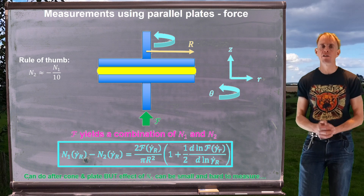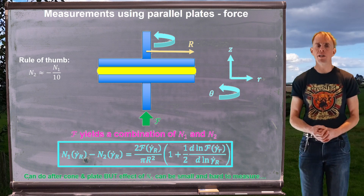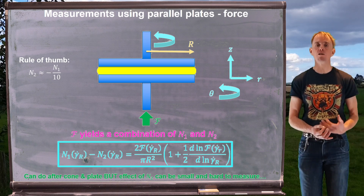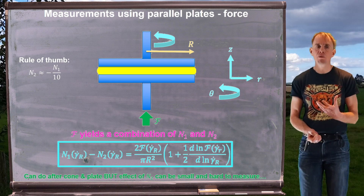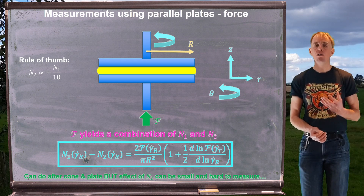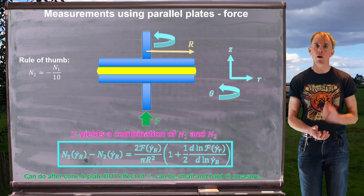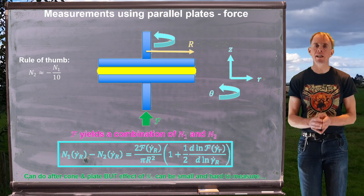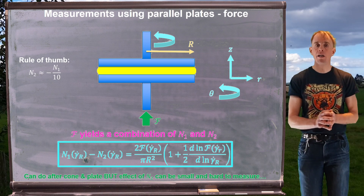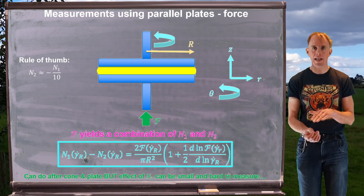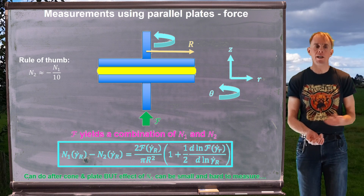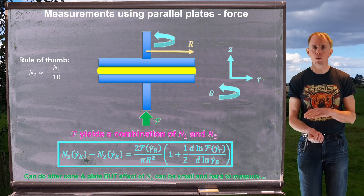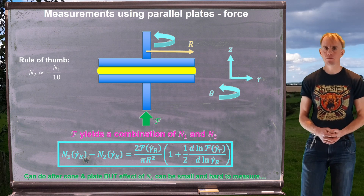The expression from the parallel plate analysis gives a combination of N1 − N2, written in a form reminiscent of the torque expressions from cone and plate rheometry. One approach is to first do cone and plate experiments to isolate N1, then do parallel plate experiments to get the N1 − N2 combination, and back out N2. However, in practice rheometers have a noise floor and minimum detectable axial thrust, so N2 may be lost in noise or rendered inaccurate, so care is needed.